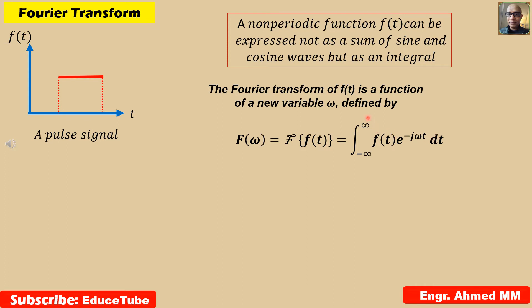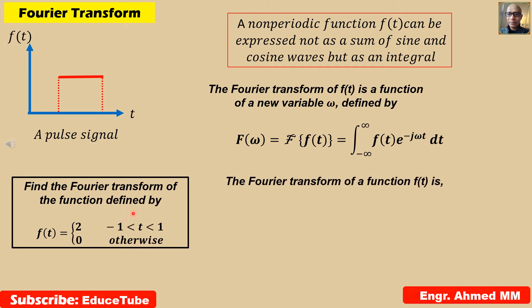When a Fourier transform is calculated the result is a complex function. In this example, find the Fourier transform of the function defined by f(t) equals 2 for t less than 1, and 0 otherwise.